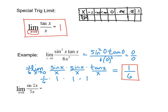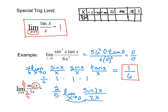For the limit as x approaches 0 of sine of 2x over 5x, we need the angle 2x to match the denominator. To turn 5x into 2x, multiply by 2/5. Multiplying both numerator and denominator by 2/5, we get 2/5 times the limit as x approaches 0 of sine of 2x over 2x. That limit equals 1 since the angle matches the denominator. So 2/5 times 1 gives a final answer of 2/5.